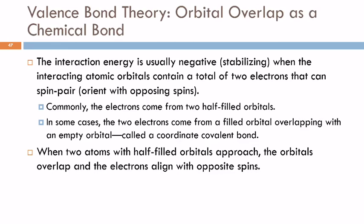So you've got your two atoms with half-filled orbitals. They approach each other, the orbitals overlap, and the electrons align so that they have opposite spins. So if they both came in positive or both came in negative, one of them would flip, and they can do that.